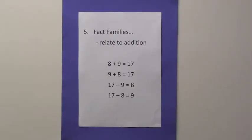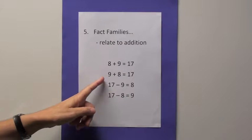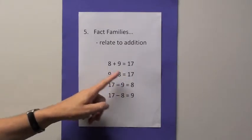It's important for children to learn that addition and subtraction facts relate to each other and they can do this by writing out fact families and using turnarounds. For example, 8 plus 9 equals 17, 9 plus 8 equals 17. Here we have the turnaround.